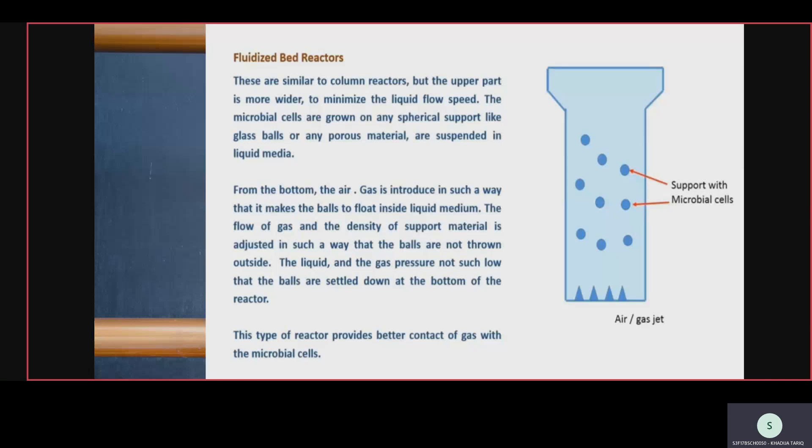We adjust the density, gas flow, pressure, and liquid pressure so that balls remain suspended in the center. This type of reactor provides better contact of gas with microbial cells — we use fluidized bed reactors specifically when we need gas contact with microbial cells. If we only need liquid contact with microbial cells, we do not use the fluidized bed reactor.